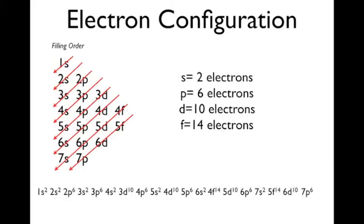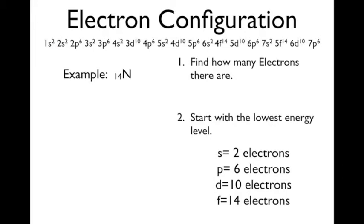Now electron configuration. To do electron configuration, you need to know the filling order. That's what all these numbers are with the arrows and lines and stuff. Then you also need to know that all the S's can hold two electrons, the P's hold six, the D's hold 10, and all the F's can hold 14 electrons. So we'll start off with just an example here.